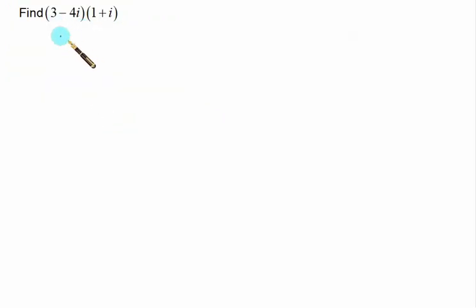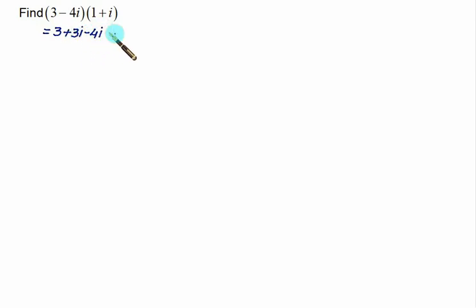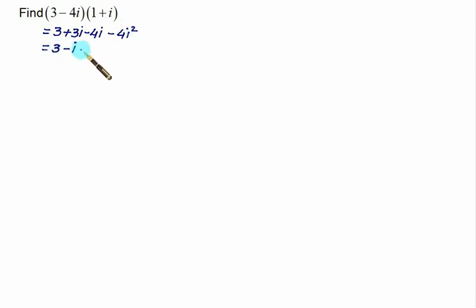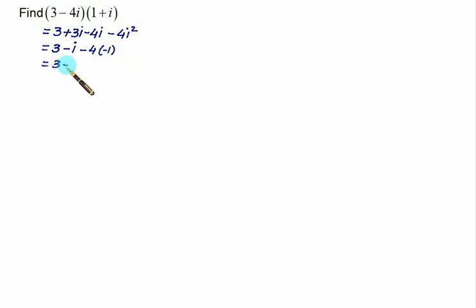Take a basic example: find (3 - 4i)(1 + i). Start multiplying: 3 with the second bracket gives 3 + 3i, then -4i gives -4i - 4i². Since i² = -1, we get 3 + 3i - 4i + 4, which simplifies to 3 - i + 4, giving a final answer of 7 - i.